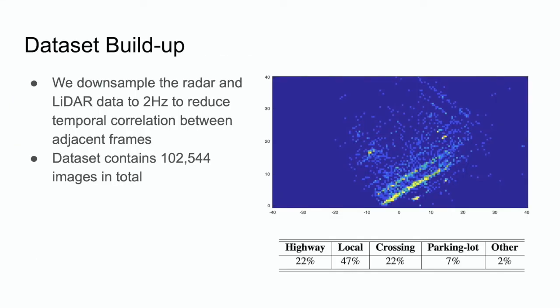To build the final dataset, we downsampled the synchronized radar and LiDAR data to reduce temporal correlation between adjacent frames. The final radar dataset contains more than 100,000 images in total. The right figure shows a spatial distribution of the ground truth bounding boxes.